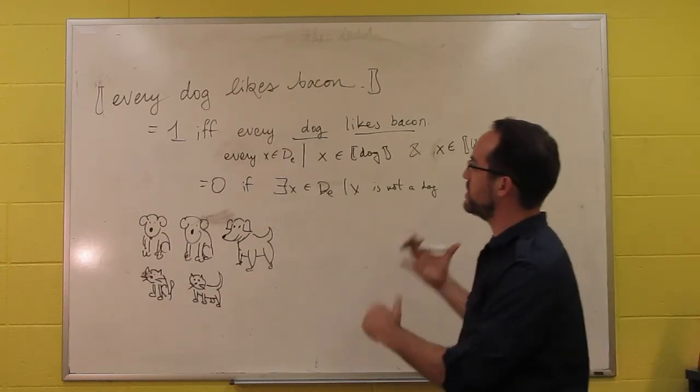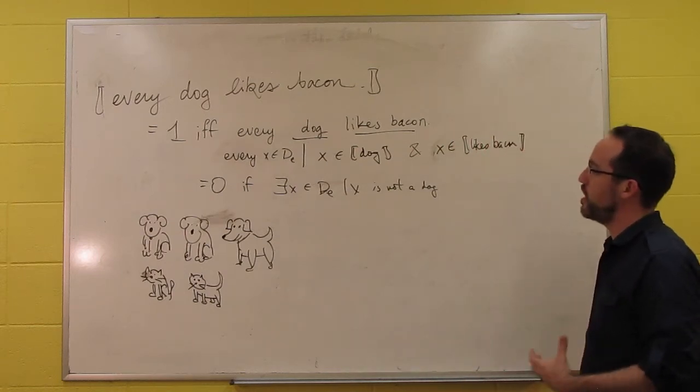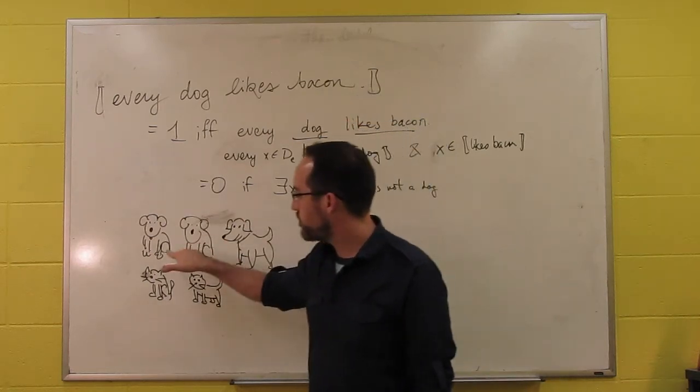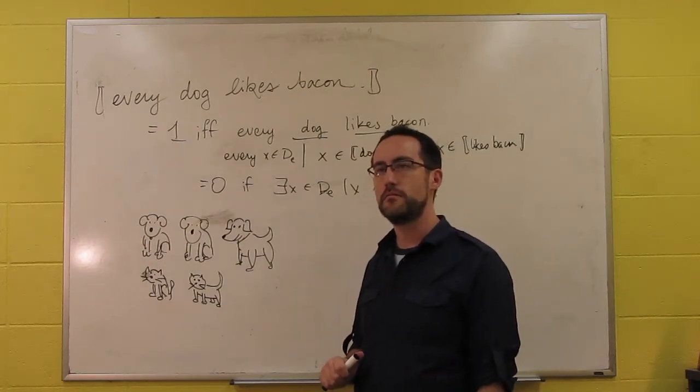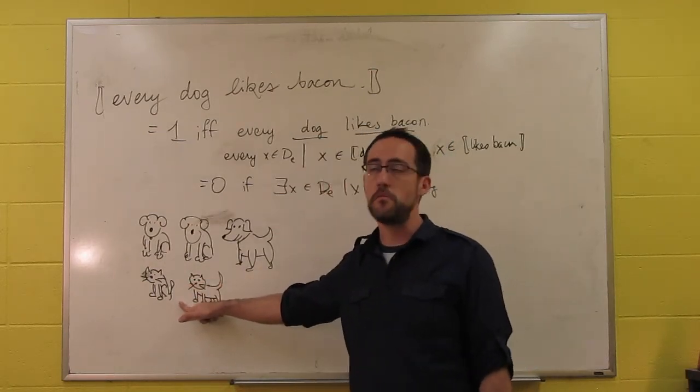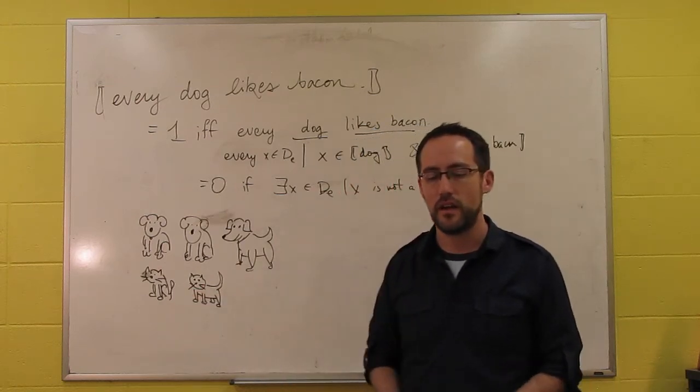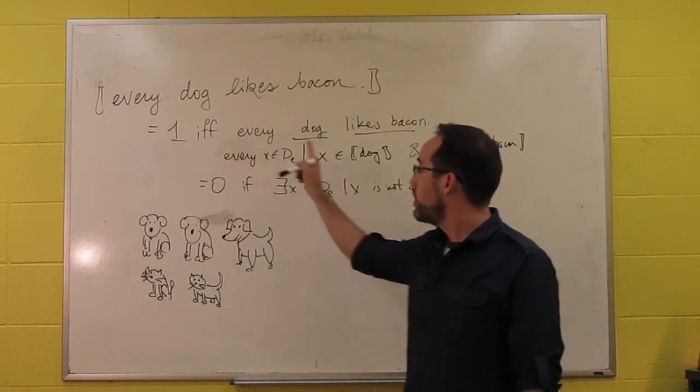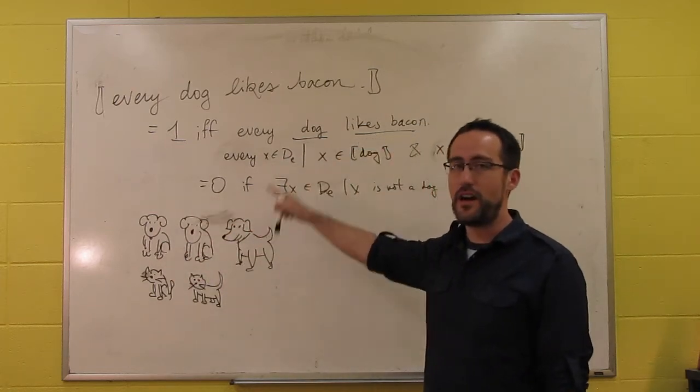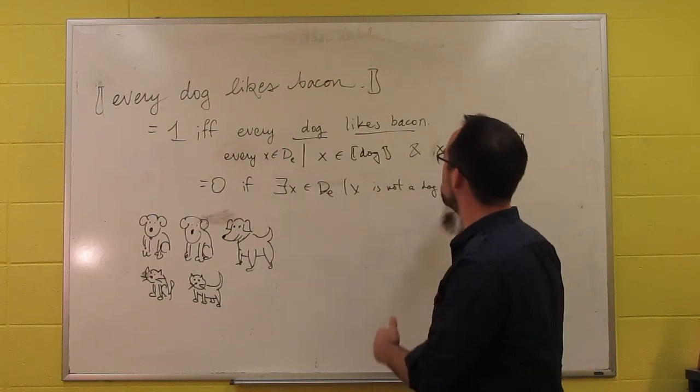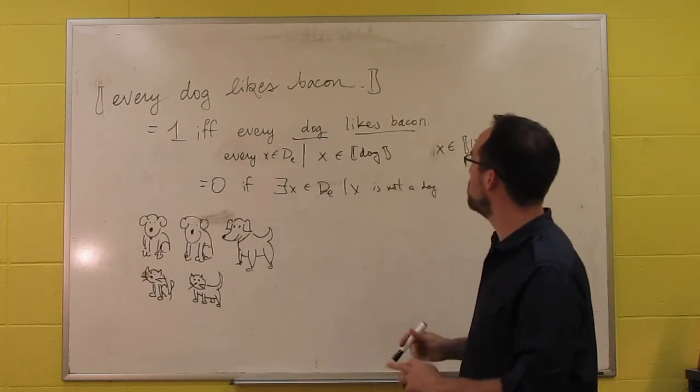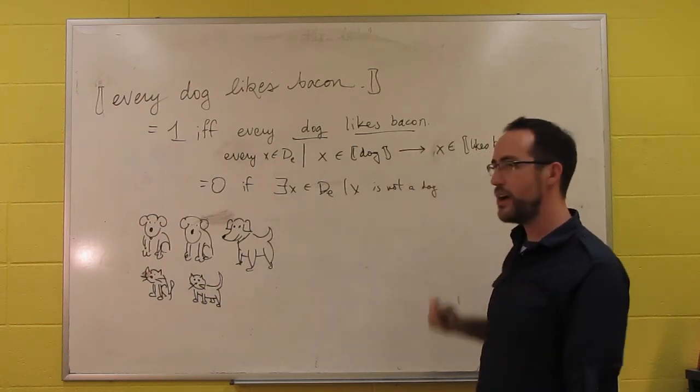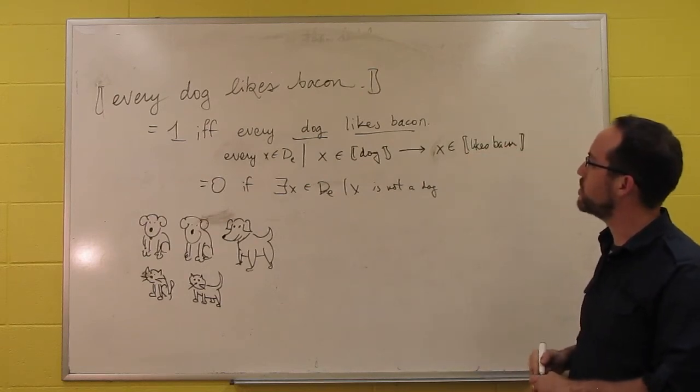How do we restrict the domain of things to dogs? The way that we do that is through an if clause. If this is a dog, then it likes bacon. If it's not a dog, we don't care. That's how if clauses work. When you don't meet the first condition, then it doesn't really matter what the second condition is. If it's a cat, who cares? If it's a dog, then we check. So we don't want to say that X is a dog and X likes bacon. We want to say: if X is a dog, then X likes bacon.